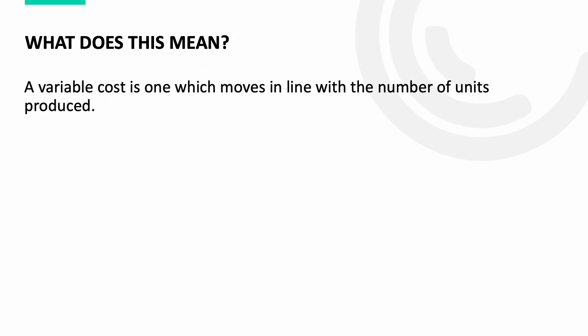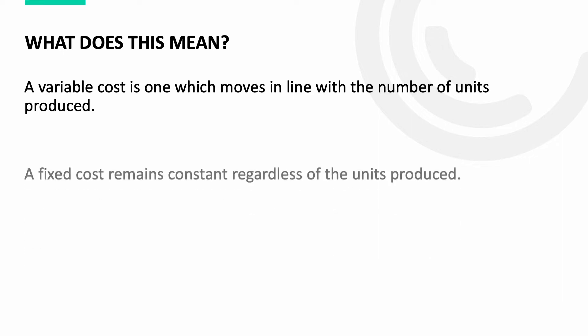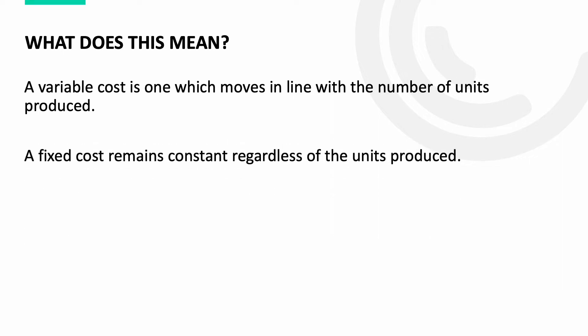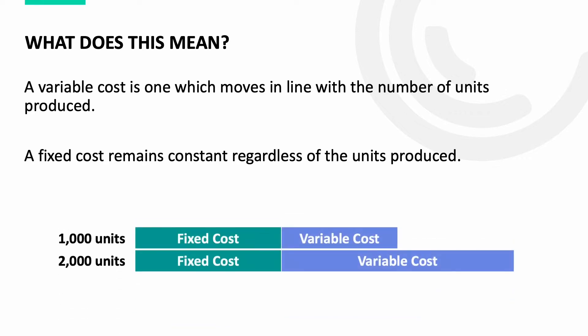A variable cost is one which moves in line with the number of units produced or used, whereas a fixed cost remains constant regardless of the number of units produced. Looking at the graphic on screen, we can see that the fixed cost element doesn't move, whereas the variable cost is double for 2,000 units in comparison to 1,000 units.